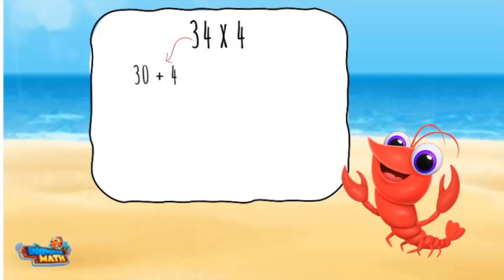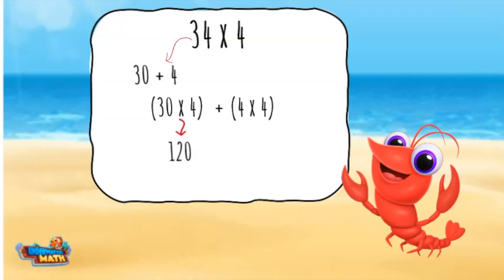I can write a new problem of 30 times 4 plus 4 times 4. I multiply 30 times 4 for a total of 120, then multiply 4 times 4 for a total of 16.